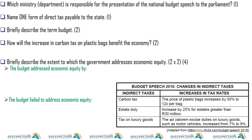Let's move on to the next one — study the table below and answer the questions that follow. I can see this is about Budget Speech 2018, changes in indirect tax. Expect questions along those lines — indirect or direct tax. We have indirect taxes: carbon tax, duty tax on luxury goods, and increasing tax rates.